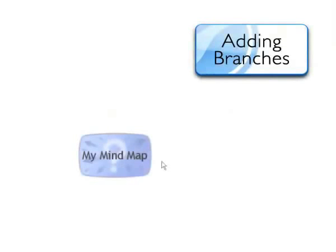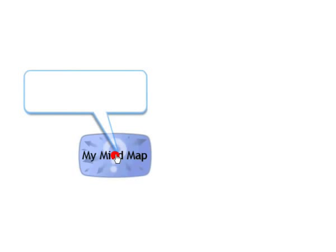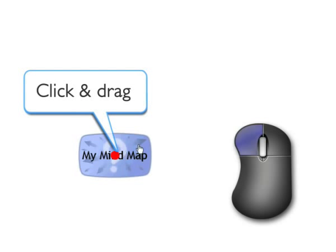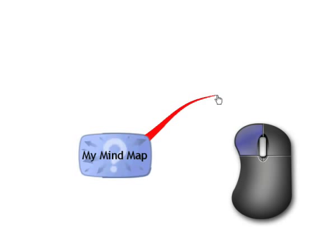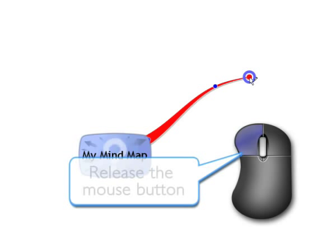To add your branches, move your cursor over your central image and you'll see a red circle appear. Click and drag outwards from the red dot and a branch will follow your cursor. Once your branch has reached your desired length, release the mouse button.